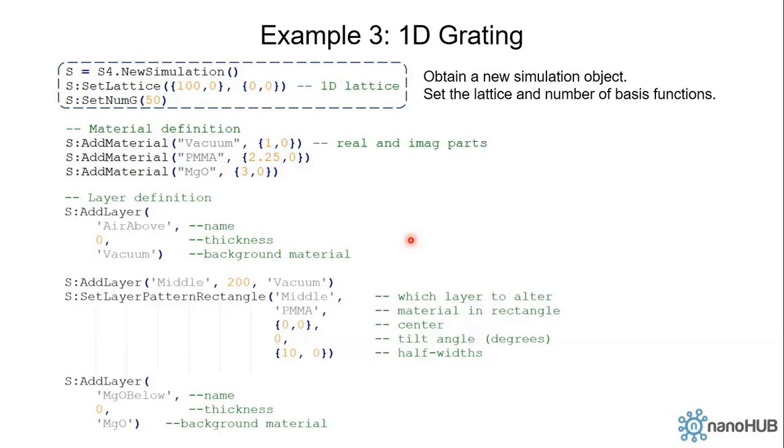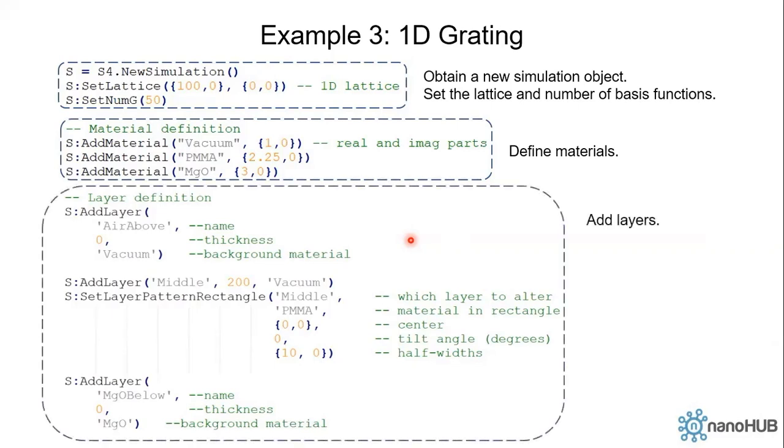Then we define the materials. We have three materials: vacuum, PMMA, and magnesium oxide. The permittivity of vacuum is 1, the permittivity of PMMA is 2.25, and magnesium oxide is 3.